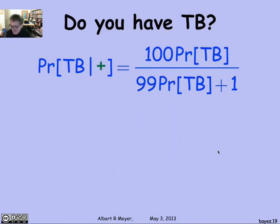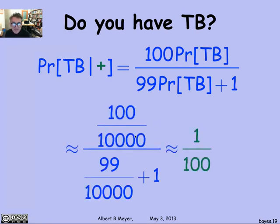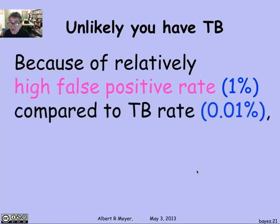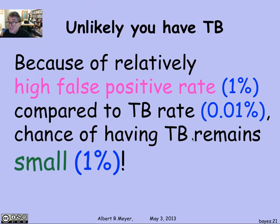Let's plug 1/10,000 in for P(TB). The probability you have TB given the test is positive becomes 100/10,000 divided by 99/10,000 plus 1. The denominator is essentially 1 (about 1.01) and the numerator is 1/100, so the result is approximately 1/100. In other words, it's not very likely that you have TB — the relatively high false positive rate of 1% washed out the actual TB cases, since the TB rate was only 0.01%. Almost all positive test results were caused by the false positive rate, meaning even with a positive test, you still only have a 1% chance of actually having TB.